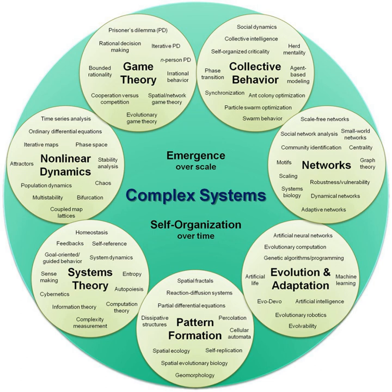Macrosystem — a larger system that influences clients, such as policies, administration of entitlement programs, and culture. Chronosystem — a system composed of significant life events that can affect adaptation.